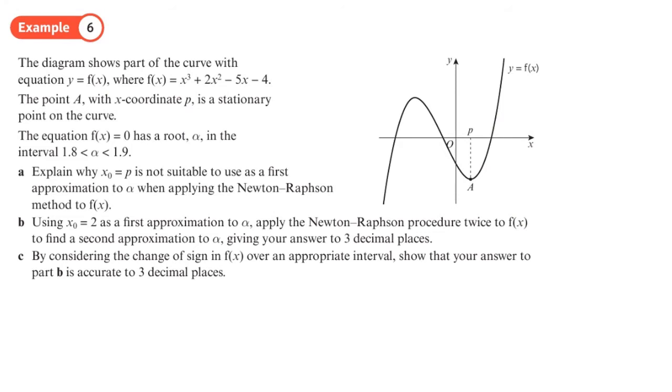Let's have a look at this. So we've got a function here. We've been given the equation of it there, it's a cubic. It says the point A with x-coordinate p is a stationary point on the curve. So that means that it's got a gradient of 0, so f'(x) there equals 0. The function f(x) = 0 has a root α in the interval 1.8 to 1.9, so that's here, so probably got 1.8 over here, 1.9 over here, something like that because it's positive.